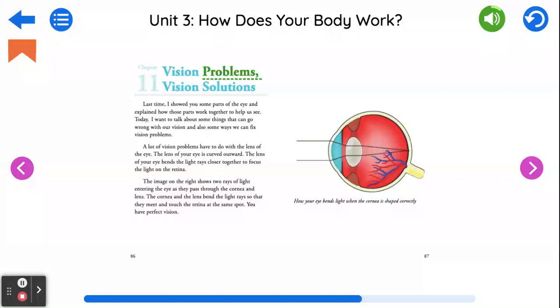Chapter 11, Vision Problems, Vision Solutions. Last time, I showed you some parts of the eye and explained how those parts work together to help us see. Today, I want to talk about some things that can go wrong with our vision, and also some ways we can fix vision problems.